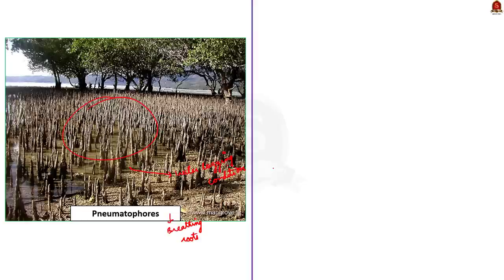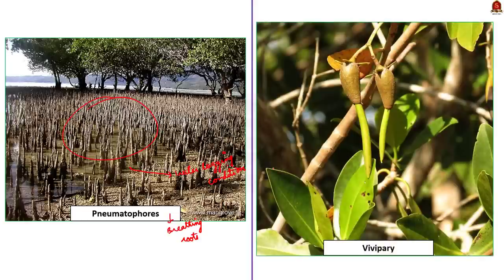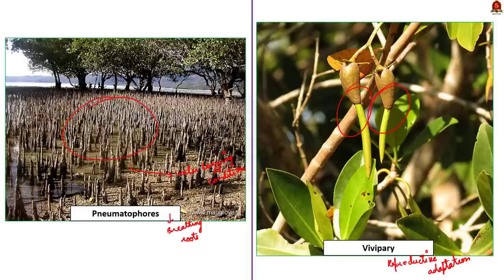The last adaptation is vivipary, a reproductive adaptation where seeds, while remaining attached to the parent tree, start germinating into a propagule. After some time they are dropped in the water below. Once in the water, the half-germinated seed either takes root in the sediments near the parent tree, or in some cases is dispersed with tides and currents to other shorelines.